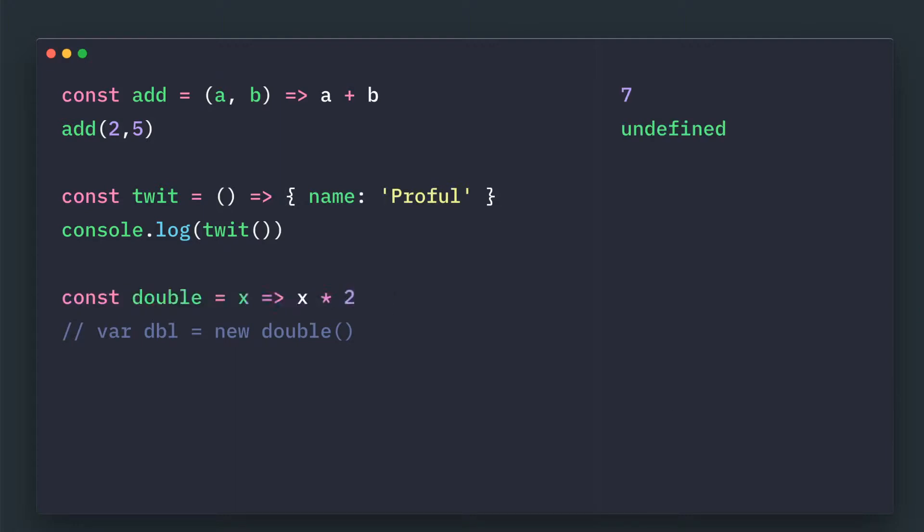Here, this is double. This is a perfectly valid syntax. But if you try to use a new constructor, it will throw an error. Double is not a constructor. But we can call this double. So it will be 5 multiplied by 2, which is 10. This is perfectly valid. But you cannot use it in conjunction with the new keyword.